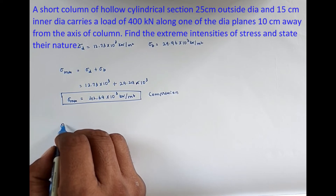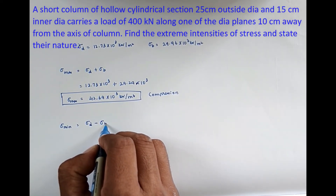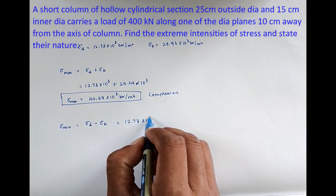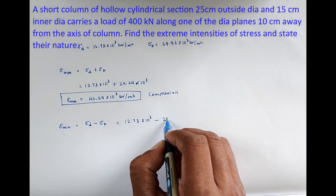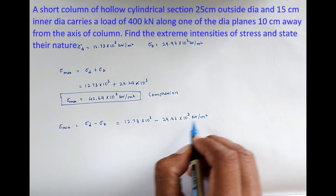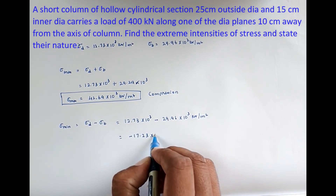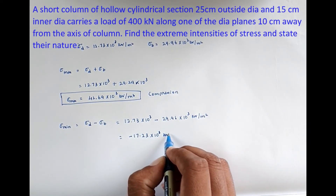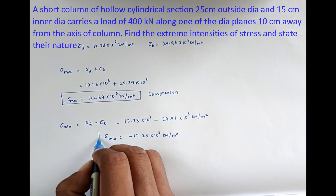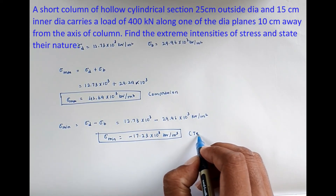Sigma minimum = sigma_D − sigma_B = 12.73 × 10³ − 29.96 × 10³ = −17.23 × 10³ kN/m². Since it is negative, the nature is tension.